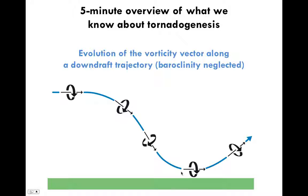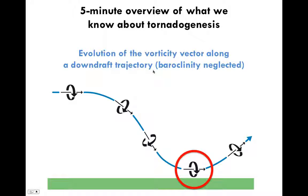But we don't get a tornado in this case either, because right at the ground the vorticity has gone horizontal — it's not vertical. The problem with this mechanism is that we don't have any effects of temperature gradients included. This baroclinity neglected here means we're assuming vorticity vectors simply follow the trajectories. The concept of a vortex line is a line that's everywhere tangent to the vorticity vectors, having the same relationship to the vorticity field that a streamline has to the wind field.